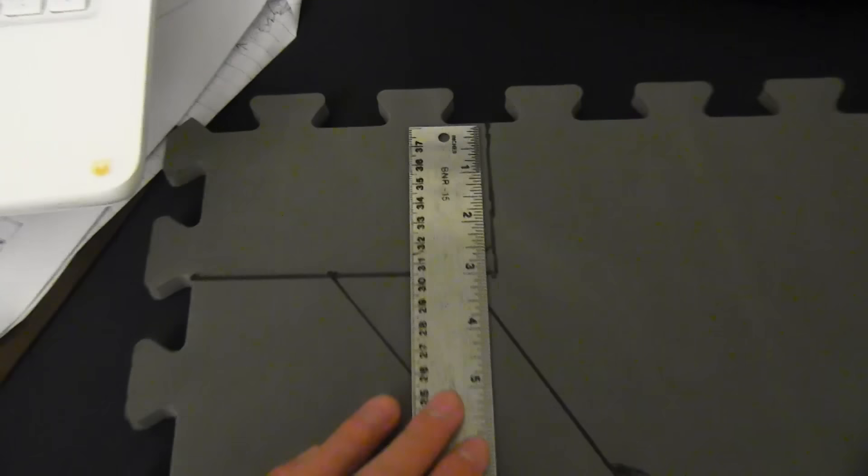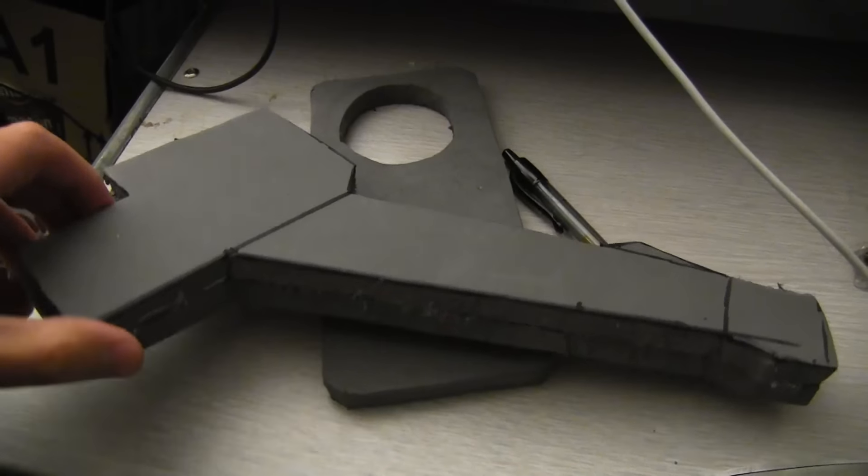This is the general shape of the handle. Cut it out in two mirrored pieces to hide the rough side in the middle. Glue them together.